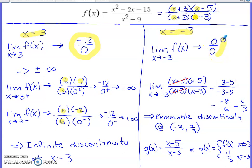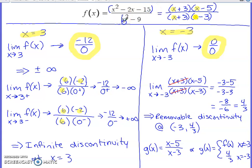Zero over zero is a signal to do some algebra and get cancellation. It's tempting to cancel x squared terms directly, but that violates the order of operations — there are implied parentheses around the numerator and denominator. Instead, factor the numerator and denominator first, then cancel common factors without reaching inside parentheses.